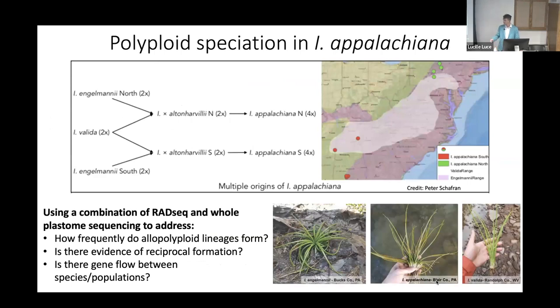To answer this and some other basic questions about polyploid speciation in Isoetes, I turned to this group, Isoetes appalachiana. I picked it for a couple reasons. It has a very large distribution. Its parentage is already known. Postdoc in our lab, Peter, previously found that it's the product of at least two separate hybridization events between Isoetes engelmannii and Isoetes valida. This was done though with low-copy nuclear genes. I wanted to leverage RAD-seq, next-gen sequencing, whole genome skimming to take a more in-depth look using more populations at how frequently these lineages form, whether lineages can form with either diploid parent as maternal parent, and whether we see any evidence of gene flow within these species.